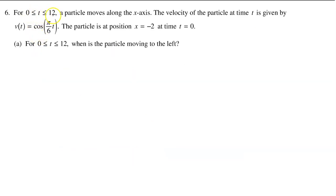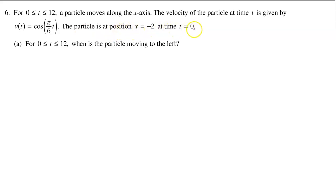On the interval from 0 to 12, a particle moves along the x-axis. The velocity of the particle at time t is given by v of t equals cosine of pi over 6 times t. The particle is at position x equals negative 2 at time t equals 0.